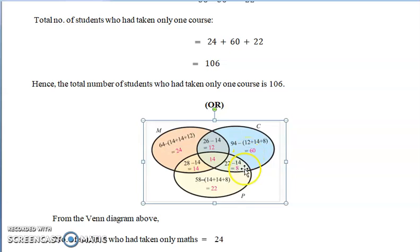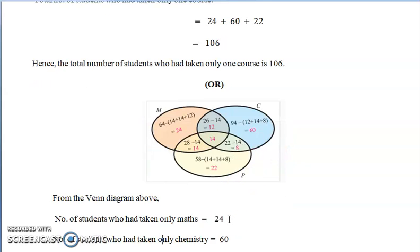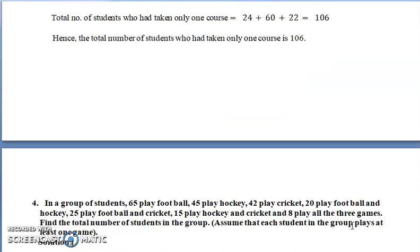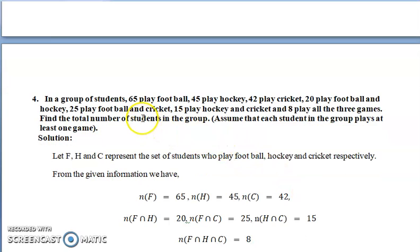Now look at another problem. In a group of students: 65 play football, 45 play hockey, 42 play cricket. Also, 20 play football and hockey, 25 play football and cricket, 15 play hockey and cricket, and 8 play all three games. Find the total number of students in the group.